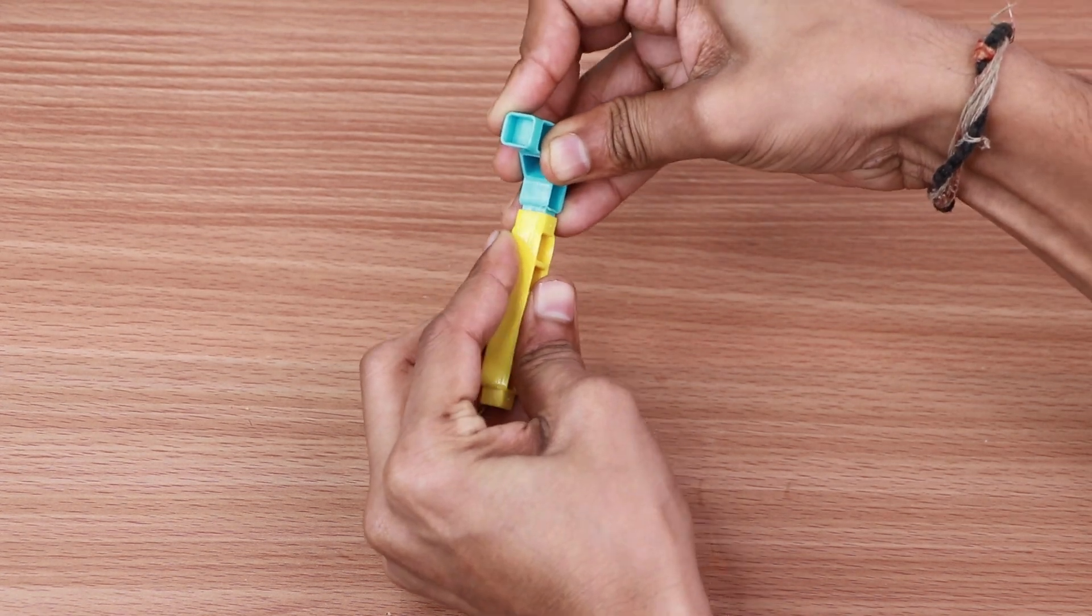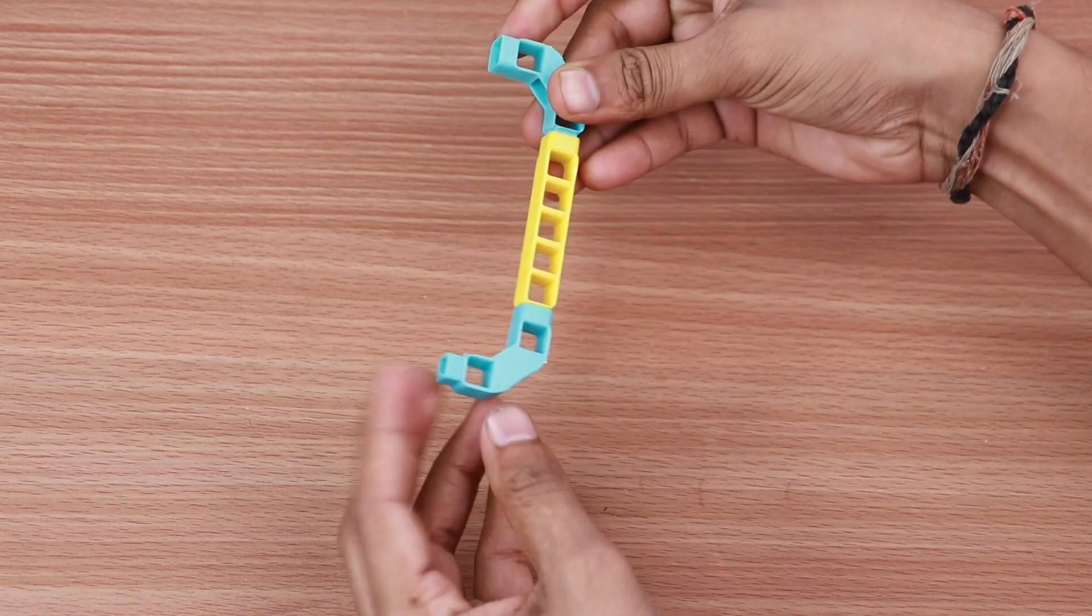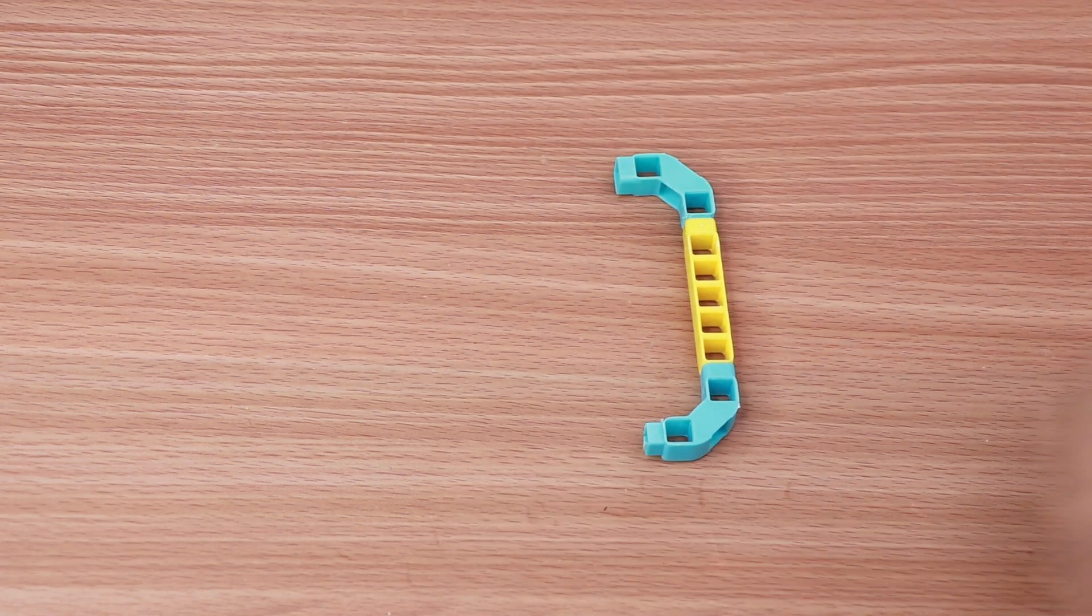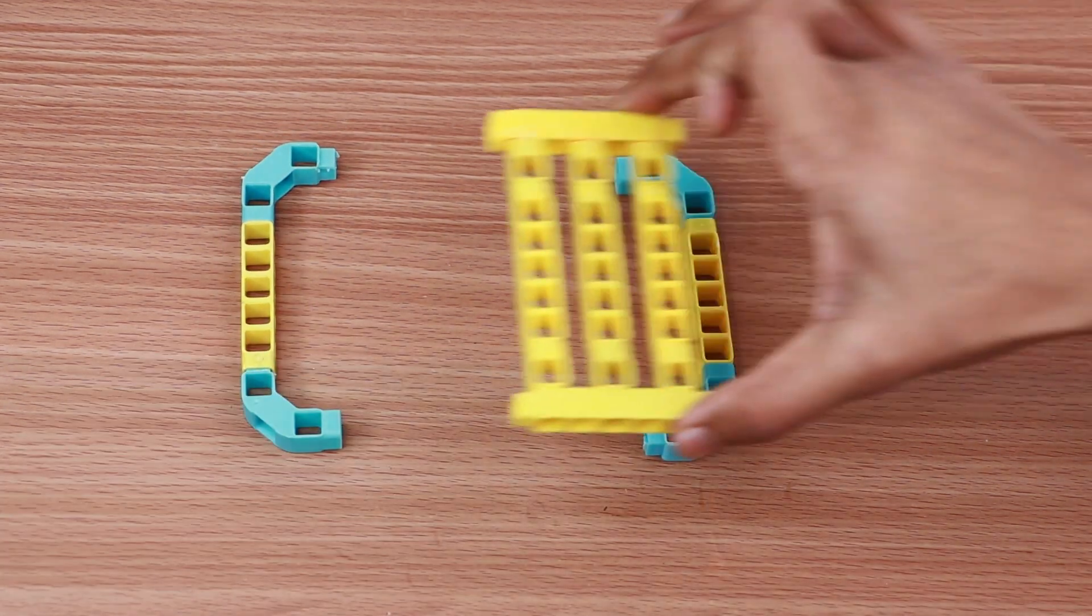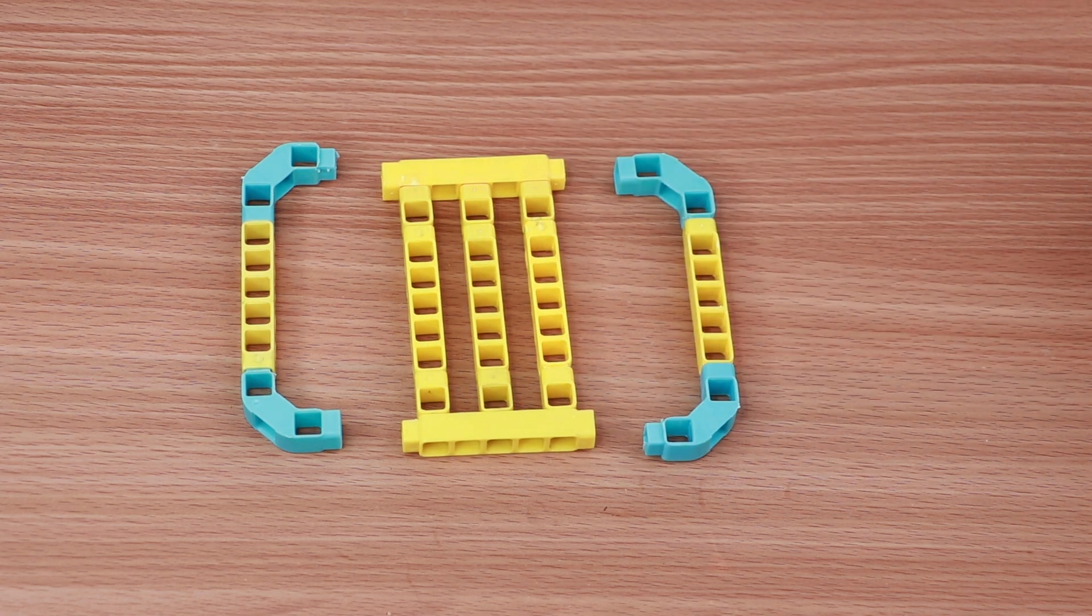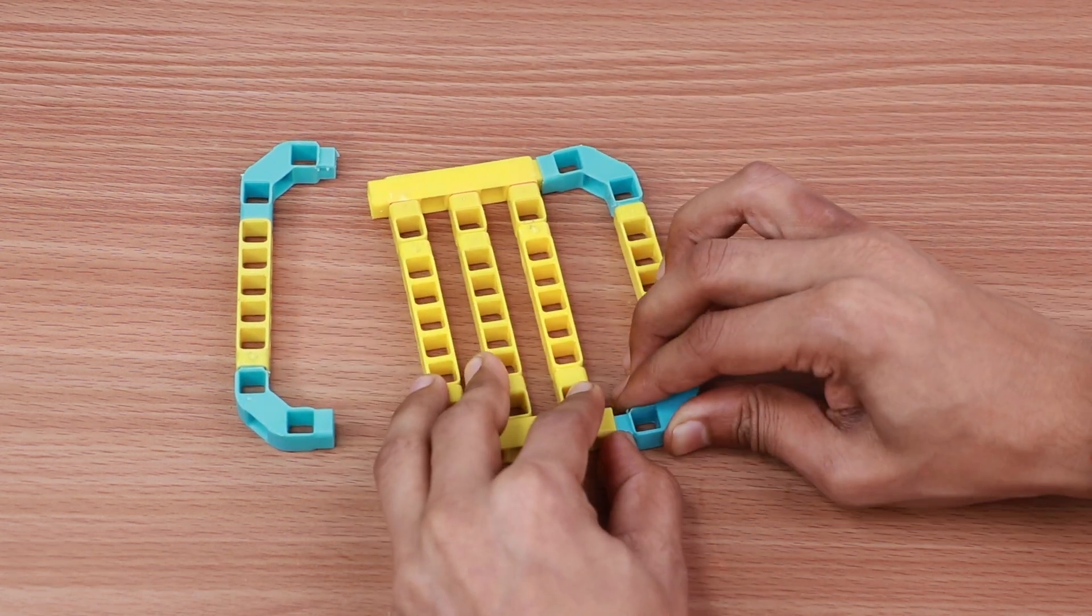Take two three-hole beams and one five-hole beam and connect it. Repeat this step to create another piece like that. Now join all the pieces together to create the gate door.